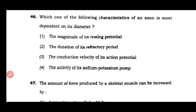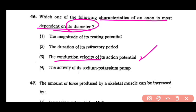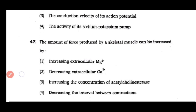Question number 46: Which characteristic of an axon is most dependent on its diameter? Magnitude of its resting potential, duration of its refractory period, conduction velocity of its action potential, or activity of its sodium-potassium pumps. The correct answer is option 3 — the conduction velocity of an axon depends on its diameter; axons with a larger diameter have a higher conduction velocity.